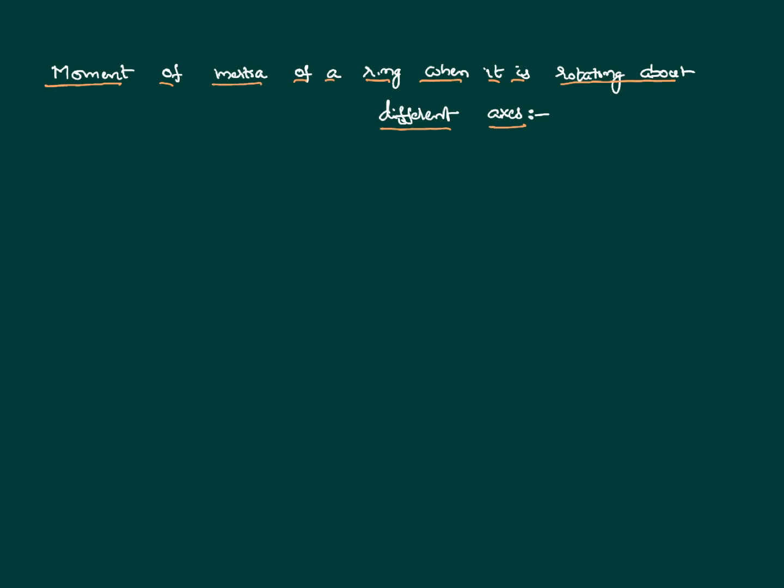Hello everyone, welcome to this post. Here we would like to discuss the moment of inertia of a ring about different axes. We know that moment of inertia is a physical quantity of rotatory motion which explains how easy or how difficult it is to rotate a body. Using the concept of integration, we can find the moment of inertia of any body, and following that procedure we have calculated the moment of inertia of a ring.